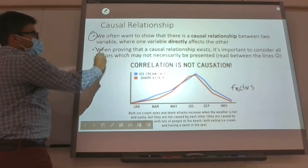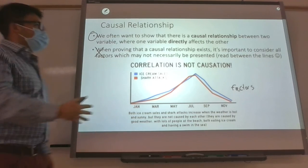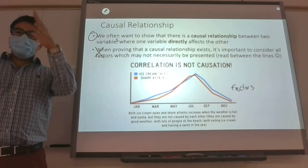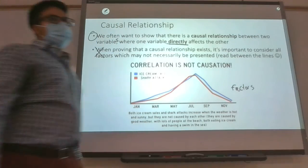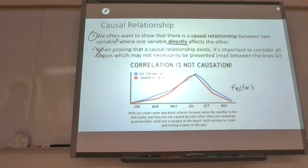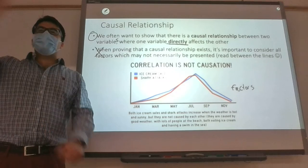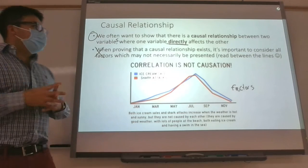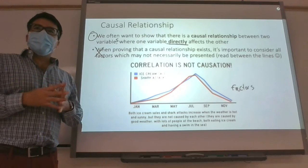So a causal relationship: we often want to show if there is a causal relationship between two variables — a scenario where one variable directly affects the other. The keyword is 'directly affects,' because we're going to see examples where variables seem to affect each other but one isn't directly caused by the other. There might be a third factor we didn't consider. We sometimes call this a third or lurking variable that we didn't consider at all.